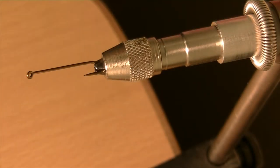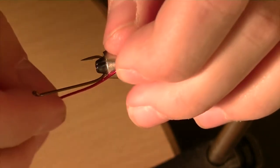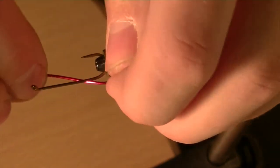The hook I'm going to be using is a size 6 streamer hook. So you're going to want about 7 inches of wire depending on the size of the wire and the hook. We're going to start at the bend and we're going to move along the shank.